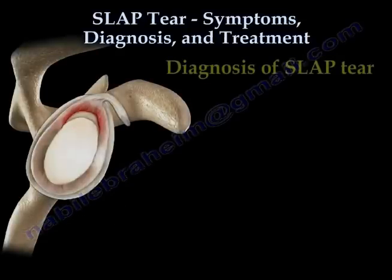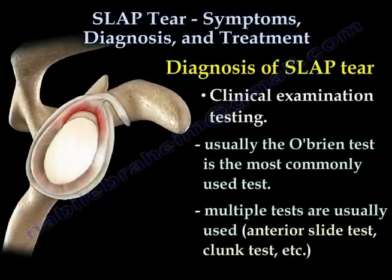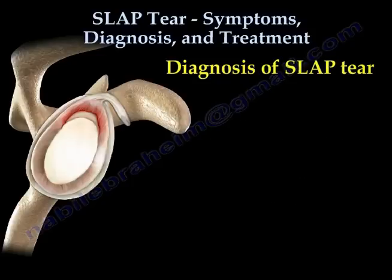Diagnosis of a slap tear involves clinical examination testing. Usually the O'Brien test is the most commonly used test. Multiple tests are usually used, such as the interior slide test and the clunk test. Diagnosis can also be done by MRI with contrast.